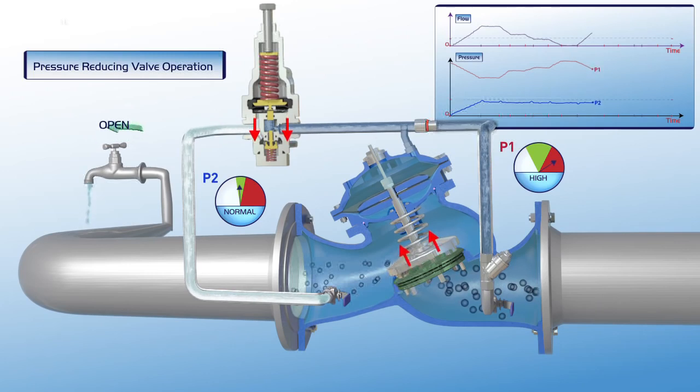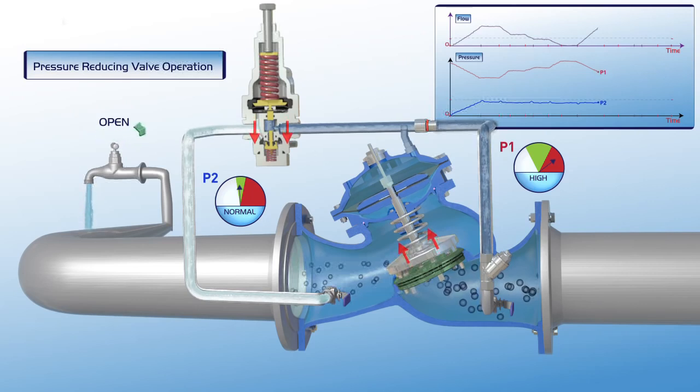On the chart showing increased flow, upstream pressure drops, while P2 downstream pressure remains in its green zone at set point level.